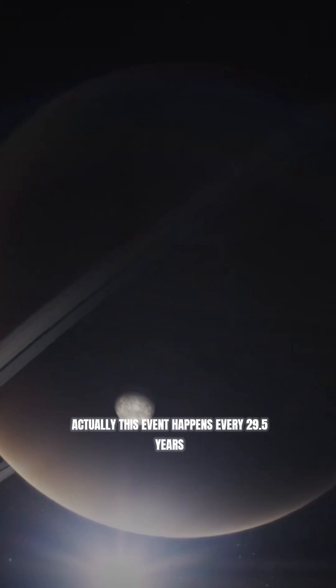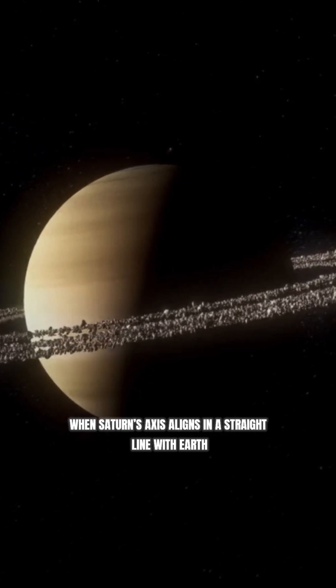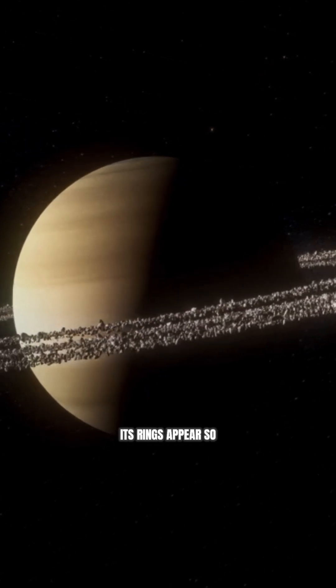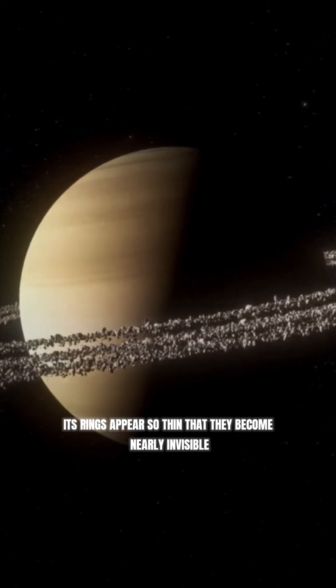Actually, this event happens every 29.5 years. When Saturn's axis aligns in a straight line with Earth, its rings appear so thin that they become nearly invisible.